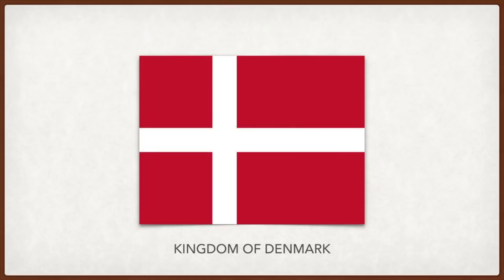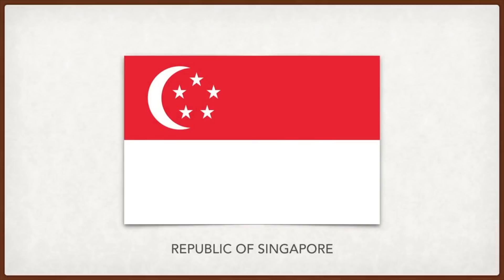Singapore: the stripes of red and white represent universal brotherhood and purity and virtue. The crescent symbolizes the growth of a young country and the five stars represent democracy, peace, progress, justice, and equality.